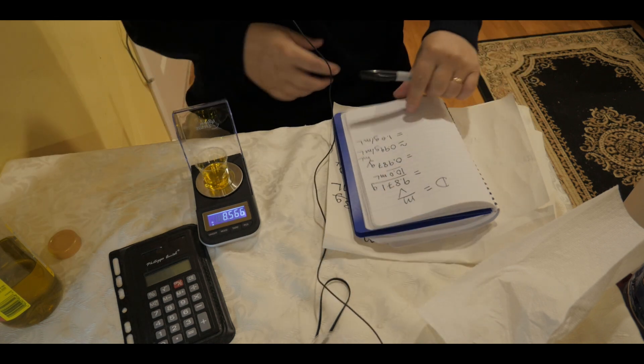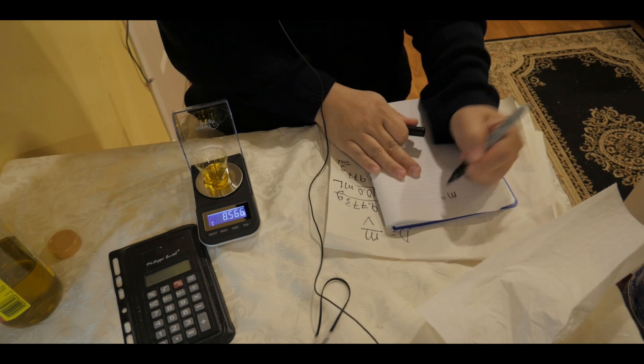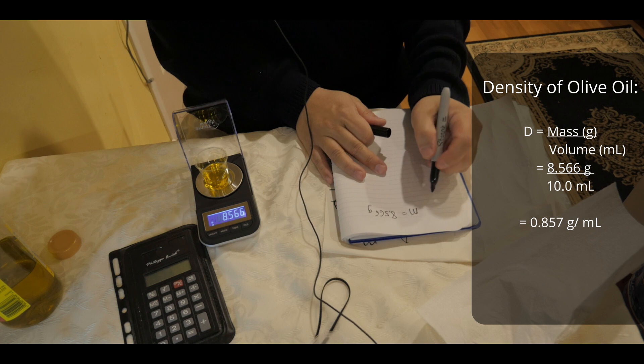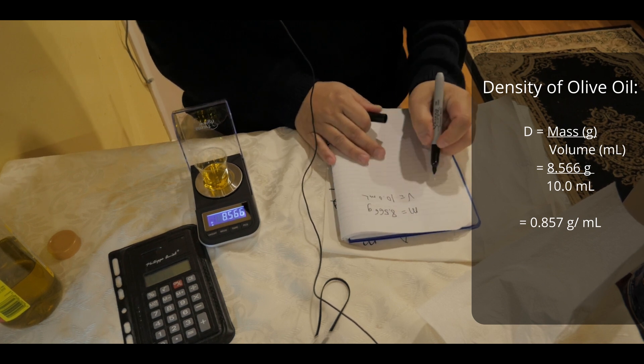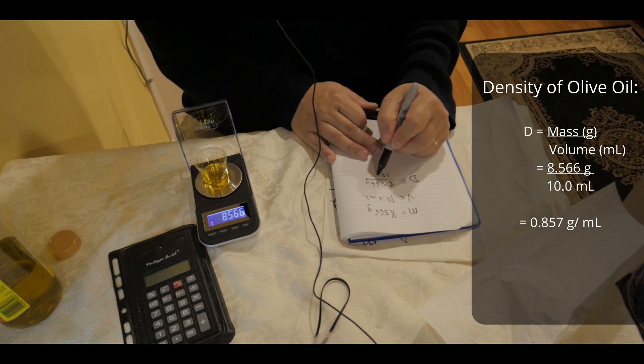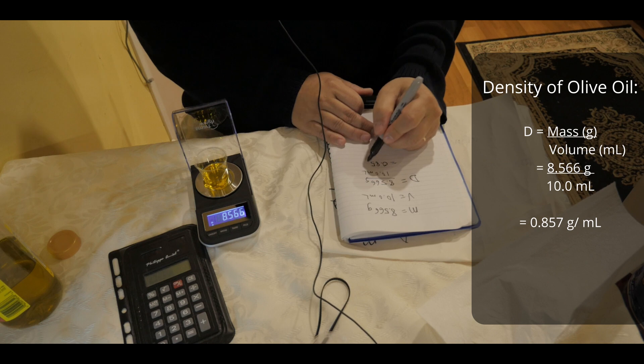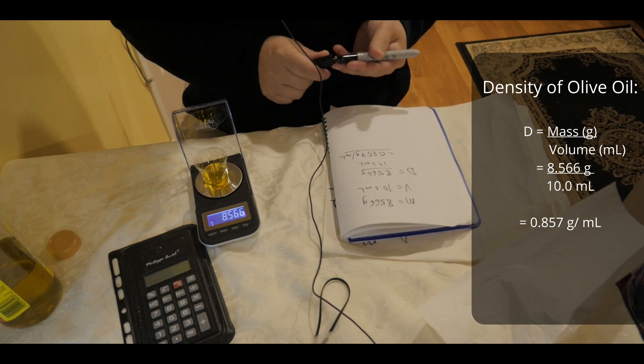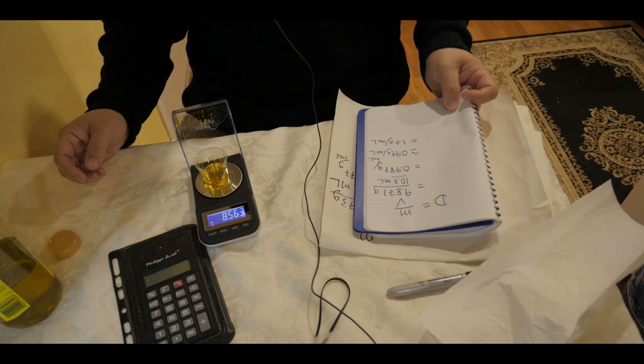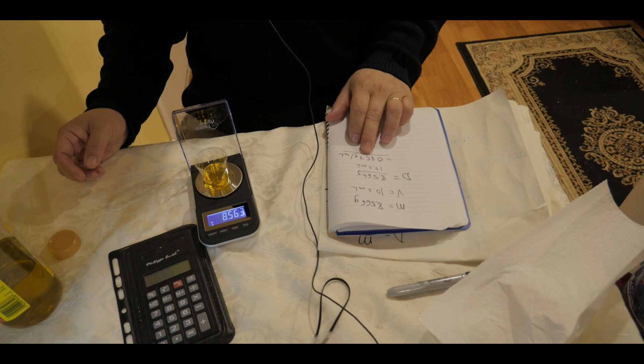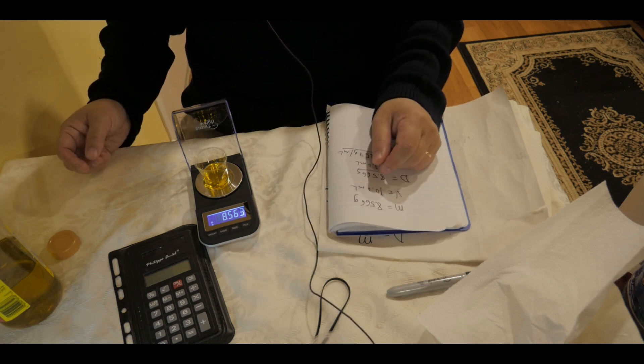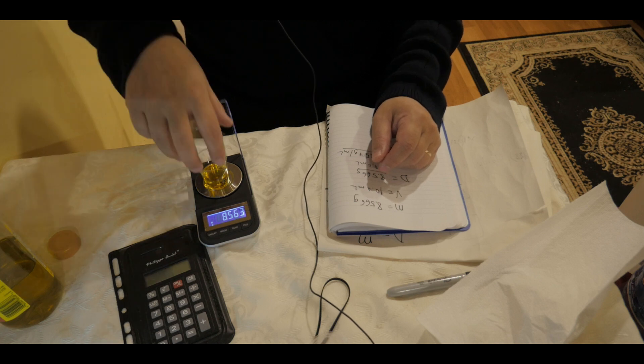And it seems like we have mass is 8.566 grams. And then we have the volume as 10.0 milliliters. So that means the density would be 8.566 grams per 10 milliliters, which is equal to 0.857 grams per milliliter. Yes. So you can see that the density of olive oil, this extra virgin 100% is less than water. Water was 0.987, whereas this is 0.857. So definitely the density of olive oil is less than water and therefore it will float. Makes sense.